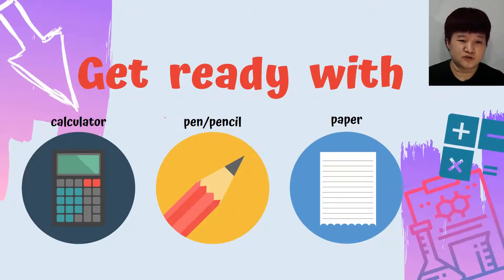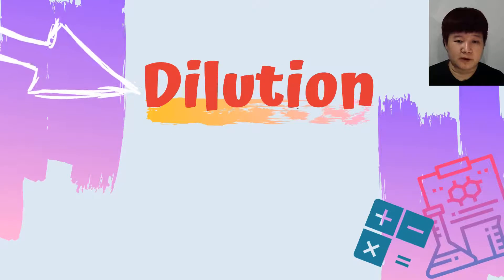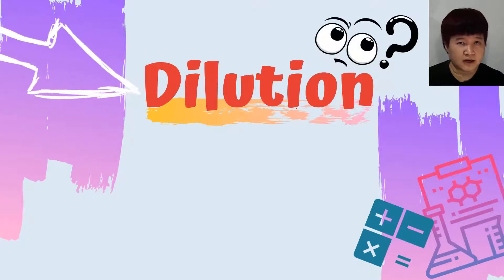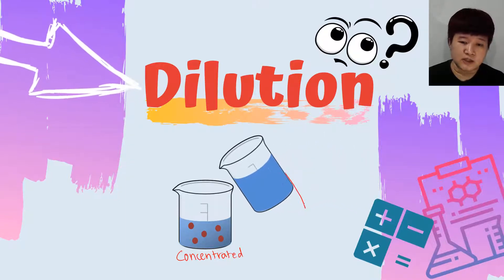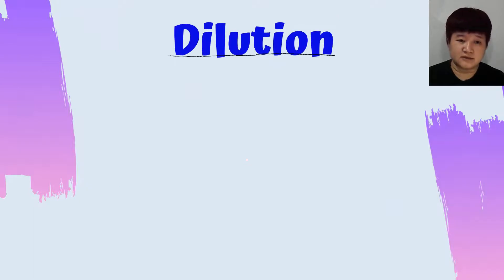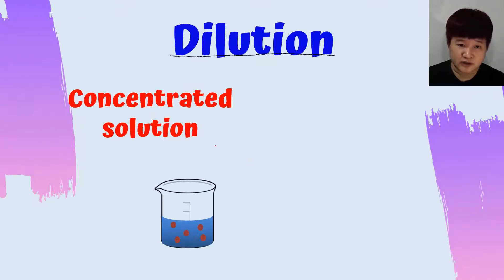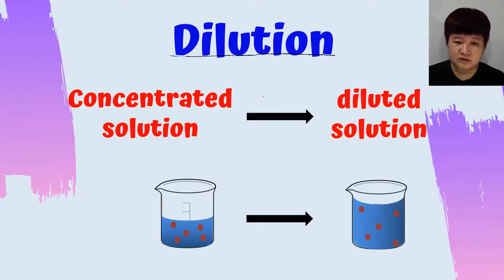Hi guys, welcome back. This is another video on calculation, but it's going to be a rather short video. In this video we will talk about dilution. A fairly simple explanation for dilution is when you have a concentrated solution and you add in more solvent — this will normally be water. Dilution is a process where a concentrated solution becomes a diluted solution by adding in solvent.